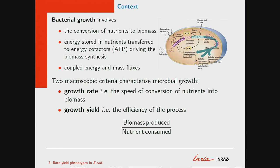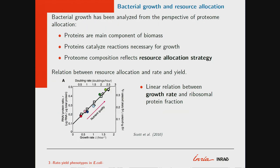Generally, two macroscopic criteria are used to characterize microbial growth. The first is the growth rate, which is just the speed of conversion of nutrients into biomass. The other one is the growth yield, which is a measure of the efficiency of this process — generally defined as the biomass produced per nutrient consumed.